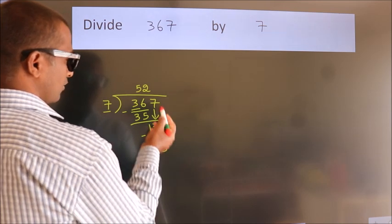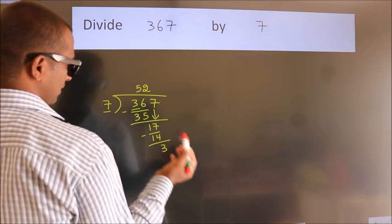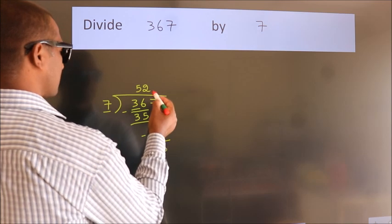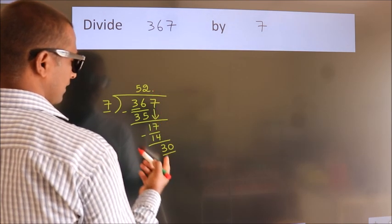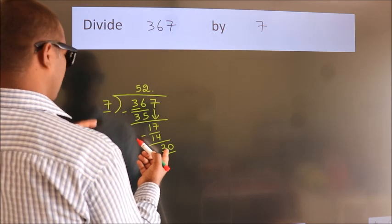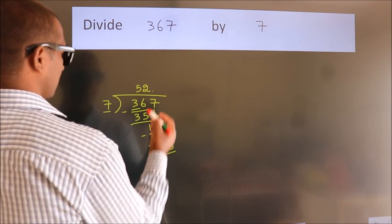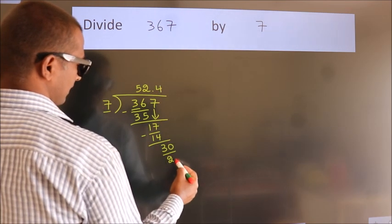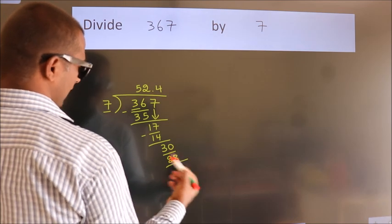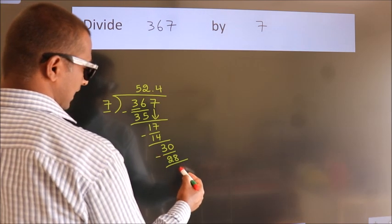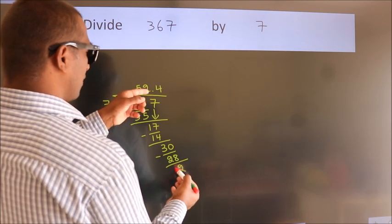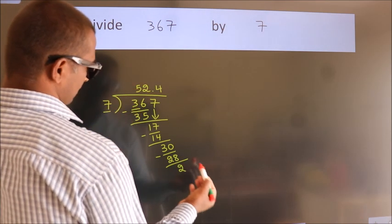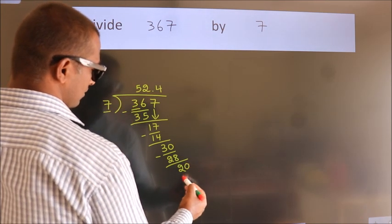After this, no more numbers to bring down. So when we subtract, we get 2. After this we already have the decimal, so directly take 0, giving us 20.